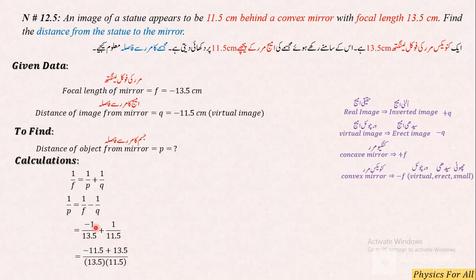Aur jab hum in dono ko multiply karke solve kiya to minus 11.5 plus yeh 13.5 ke saath multiply hoga. 13.5 mein se 11.5 minus karenge to hamare paas aa jaye ga 2, aur yeh aa jaye ga 2 over 155.25.